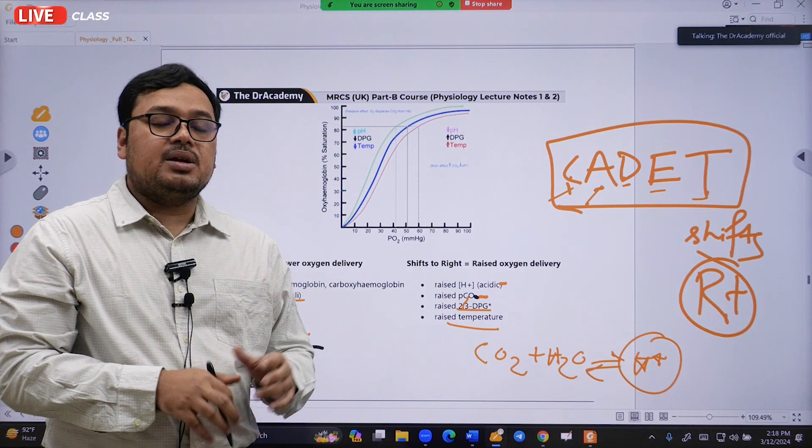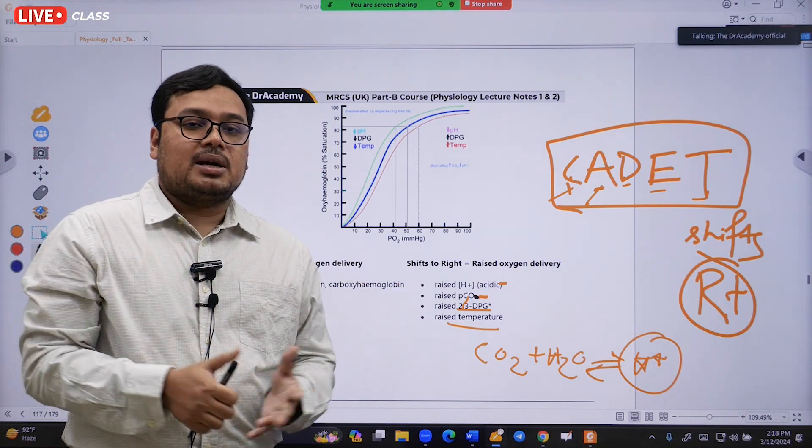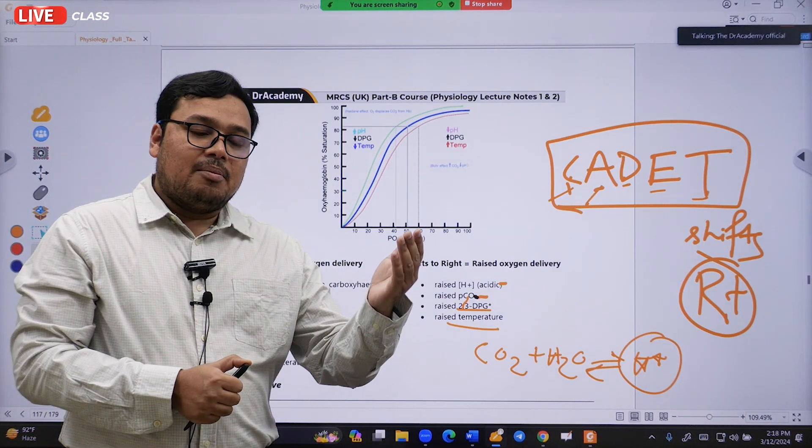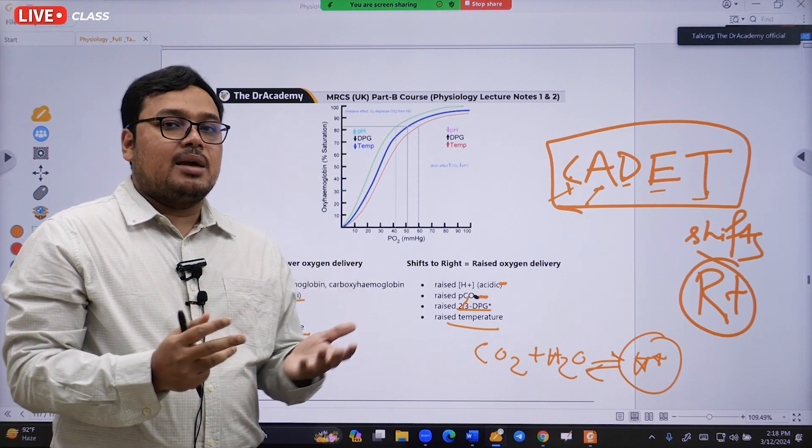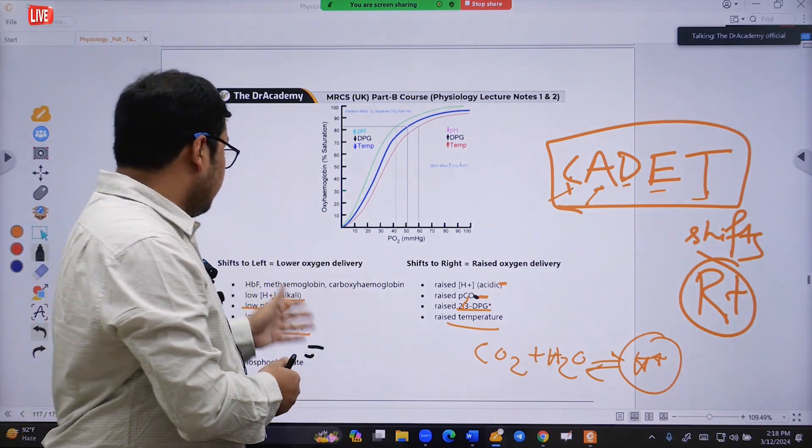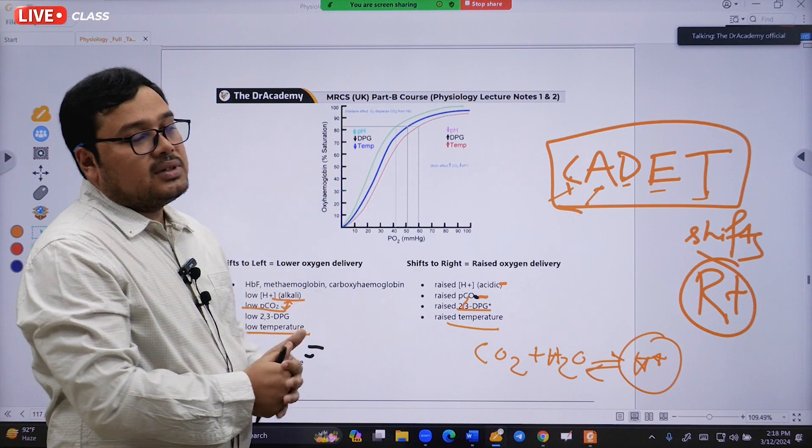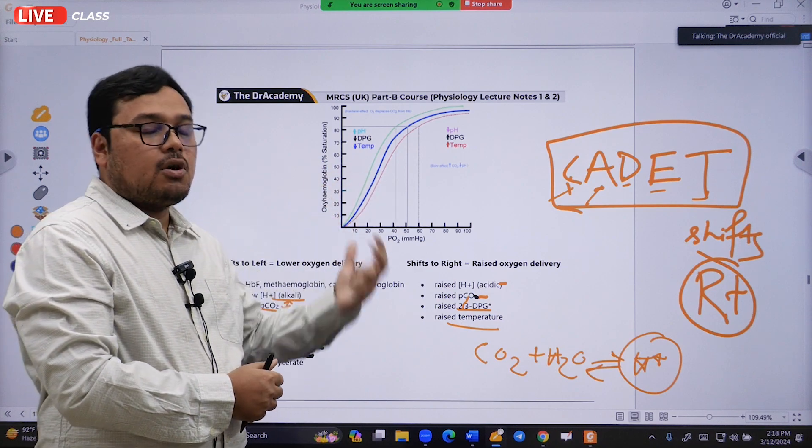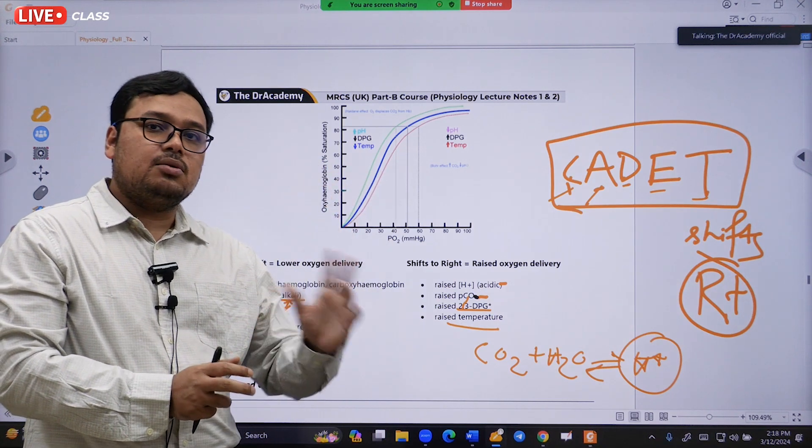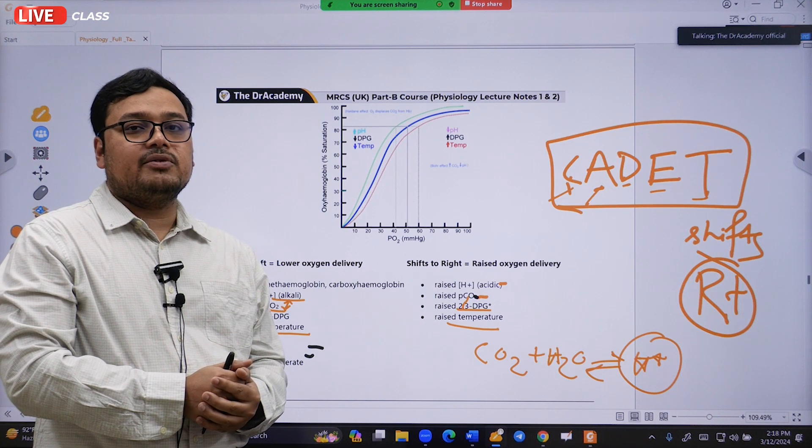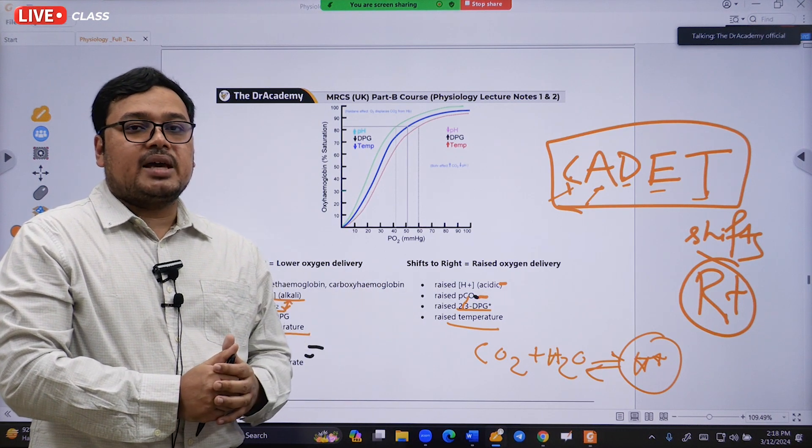Because of high exhalation of carbon dioxide, the body pH will be higher, meaning alkaline. Everything will emphasize that the patient will have a left shift of the oxygen dissociation curve.